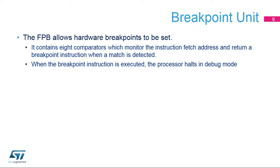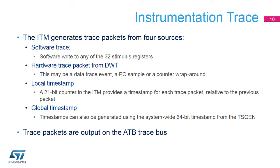Software can write directly to any of 32-by-32-bit instrumentation trace macrocell, or ITM, stimulus registers to generate packets. The permission level for each port can be programmed. When software writes to an enabled stimulus port, the ITM combines the identity of the port, the size of the write access, and the data written into a packet that it writes to a FIFO. The ITM outputs packets from the FIFO onto the trace bus. Reading a stimulus port register returns the status of the stimulus register — empty or pending — in bit 0. If multiple sources generate packets at the same time, the ITM arbitrates the order in which packets are output.